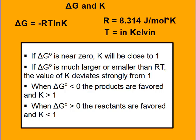We can relate delta G and K with the equation delta G equals negative RT ln K. When using R in thermodynamic quantities, use 8.314 joules per mole Kelvin. Temperature must still be in Kelvin. If delta G is near zero, K will be close to one. When delta G is less than zero, the products are favored and K will be large — a negative delta G corresponds to a large K value and lots of products.